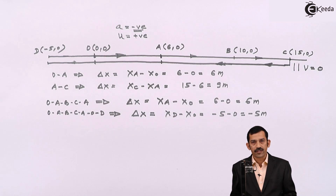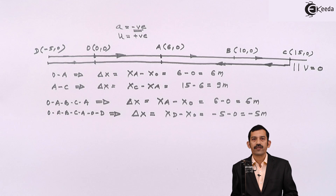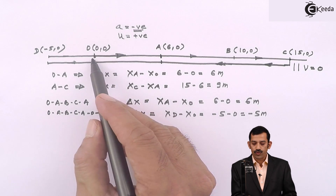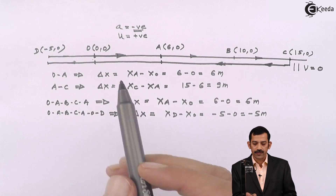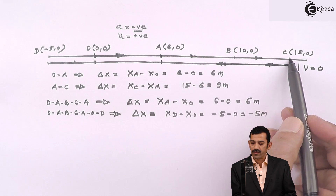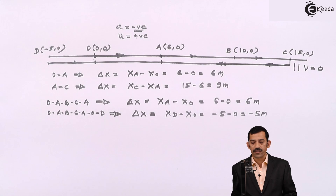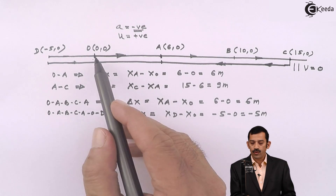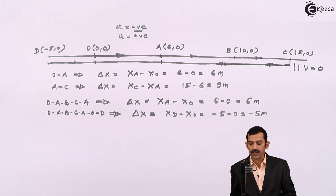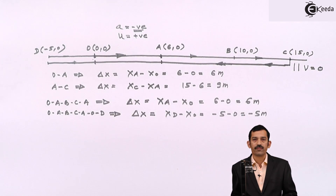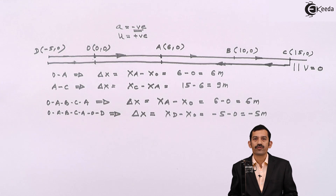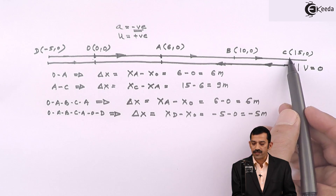Distance traveled is the actual length of path traveled by the particle during motion. For O to C, distance traveled = 15 − 0 = 15 meters. For O to A, it is 6 meters; for O to B, 10 meters. Displacement and distance traveled remain the same if the particle continues in the same direction as its initial motion.